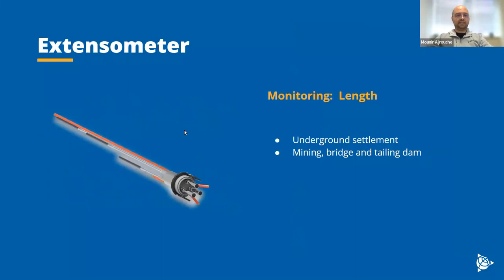We also have the extensometer. Extensometers are used to measure and monitor lengths. They can monitor the settlement of a foundation in real time and provide valuable information to evaluate the performance of various foundation types like piles. They are also used during construction to monitor surrounding soil and rock displacement, helping engineers ensure construction safety and stability as it progresses.